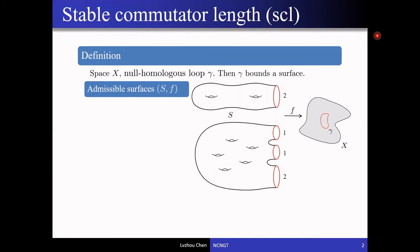One piece is the underlying topological surface, which is compact and oriented. The other is a map from the surface to the given space X, such that each boundary component of the surface wraps around the given loop gamma, possibly several times. From the map F, we can read off integers indicating how many times each boundary component wraps around gamma. The sum of these numbers is called the degree of the admissible surface.